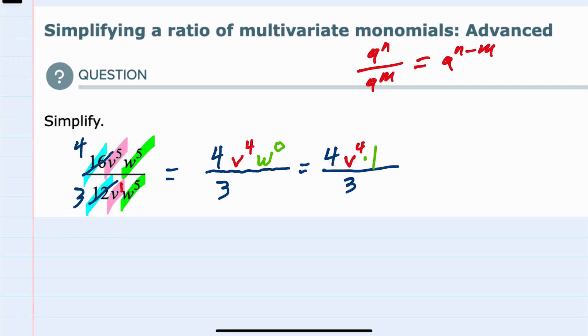I can then recognize that I have two numbers in the numerator, 4 and 1, and they can be combined. 4 times 1 is just 4, so we have 4v^4 in the numerator and 3 in the denominator. We have simplified as much as possible.